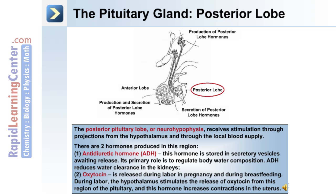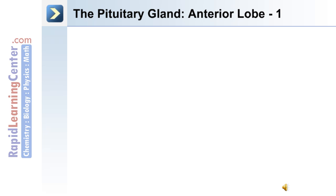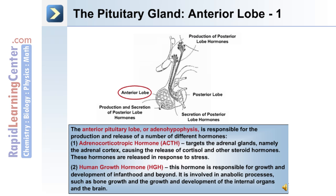The majority of pituitary hormones are produced in the anterior lobe, or adenohypophysis. This is responsible for the production and release of a number of hormones, including adrenal corticotropic hormone, or ACTH. ACTH targets the adrenal cortex, causing the release of cortisol and other steroid hormones in response to stress on the body. Number two is human growth hormone, or HGH.